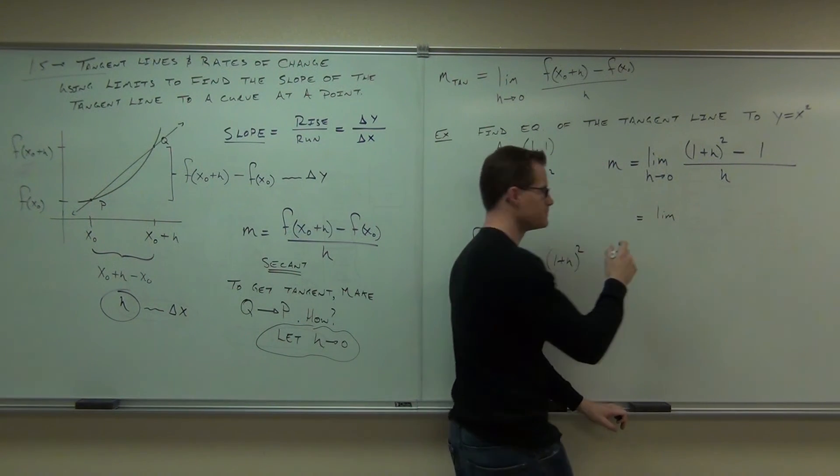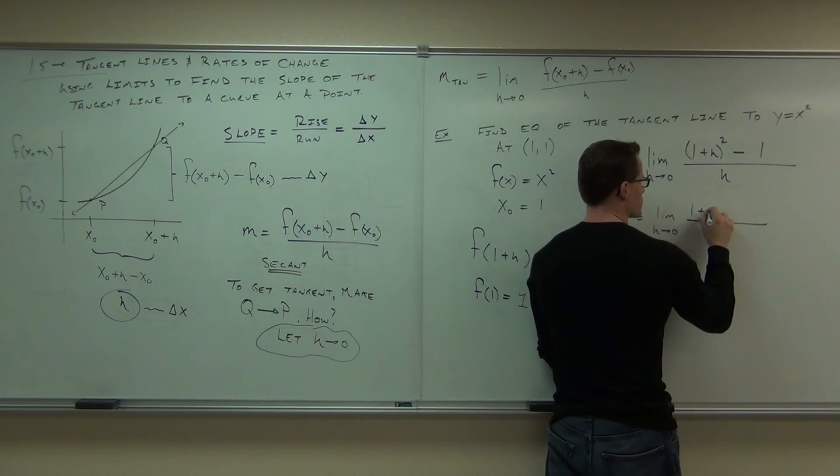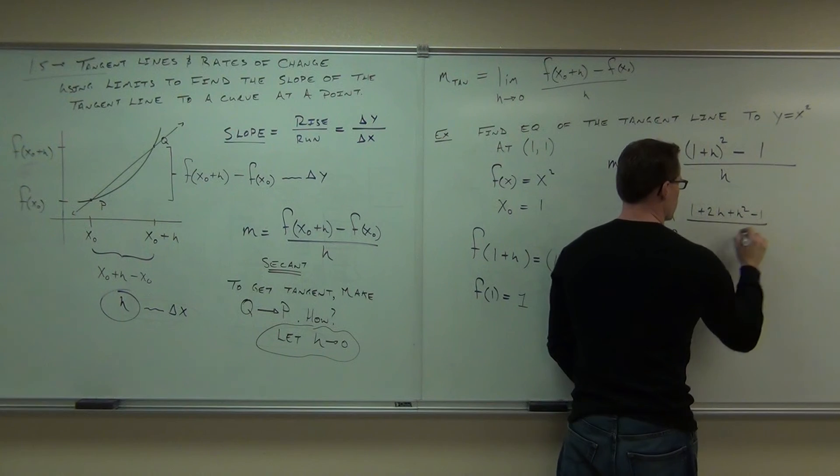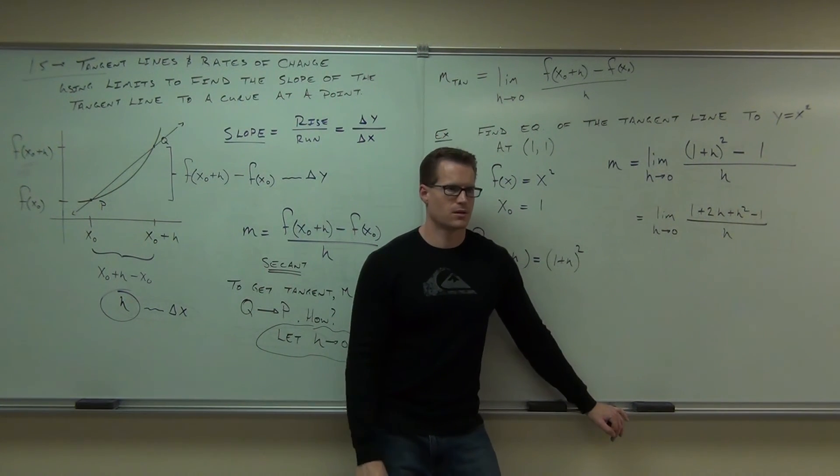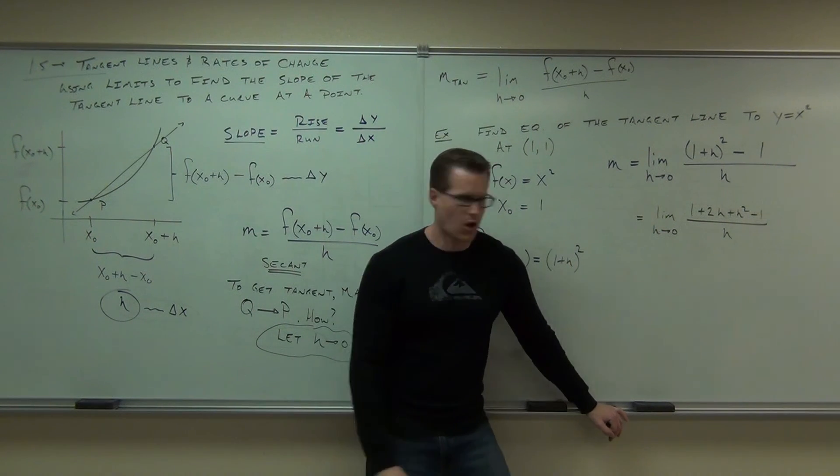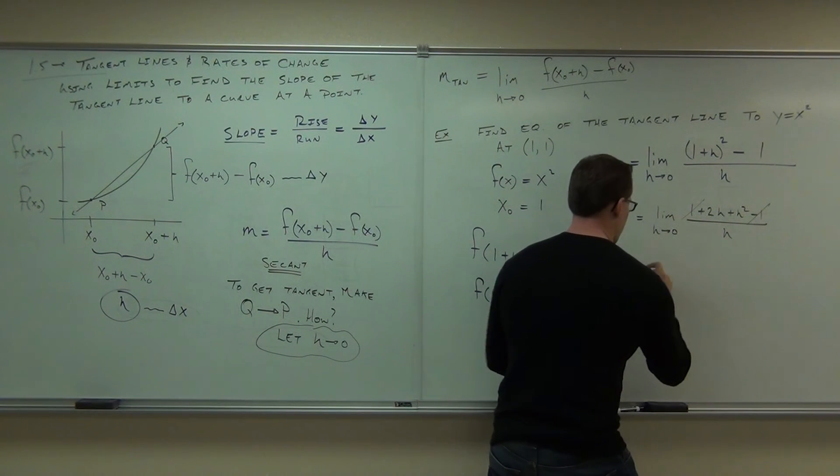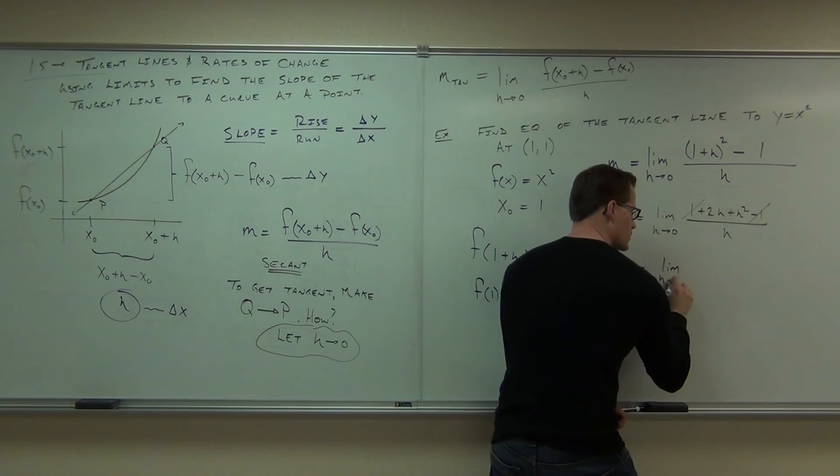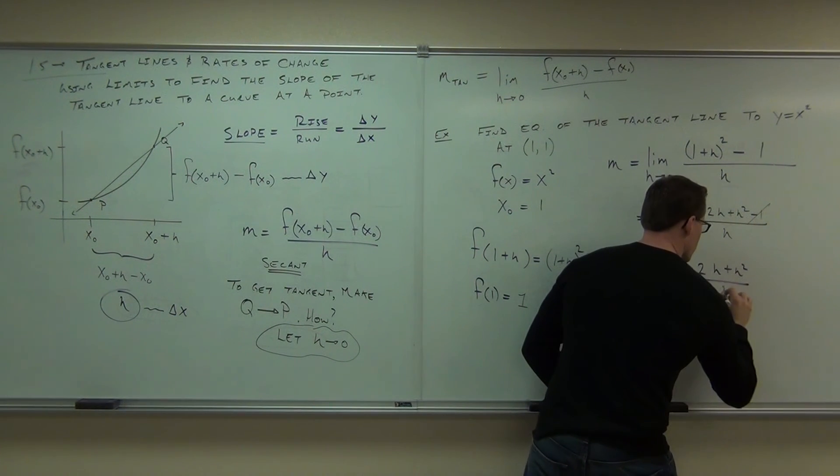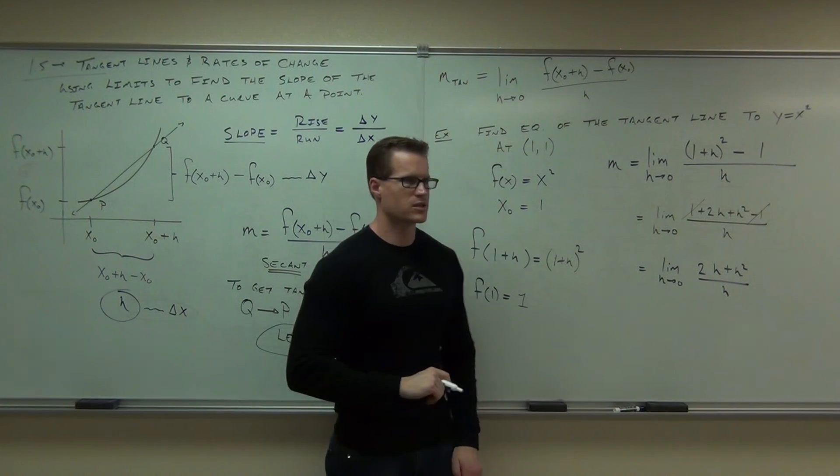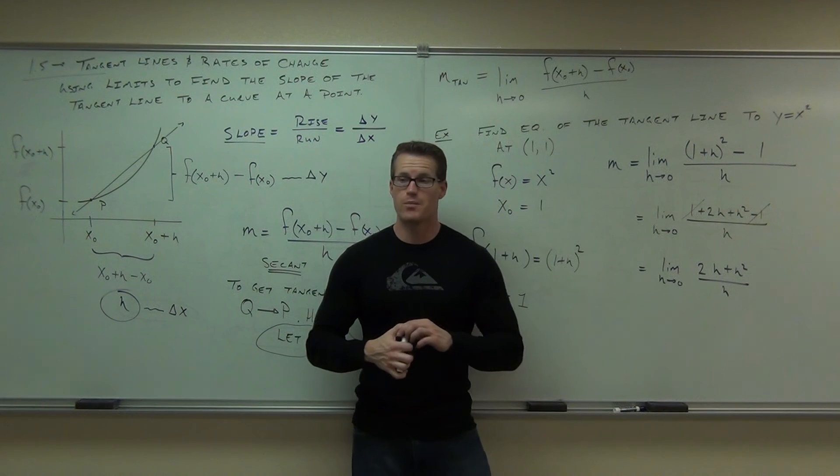Don't forget to write the limit. Let's see, that's 1 plus 2h plus h squared minus 1 over h. Did you get the same thing when you distributed it as well? What happens here? The 1's cancel. The 1's are gone. Okay, I like that. That's great. So that is the limit as h goes to 0 of 2h plus h squared over h. Oh man, if I plug in 0 right now, it's still going to 0 over 0. What's another thing that I might be able to do? Factor.